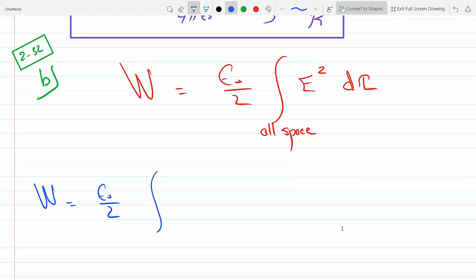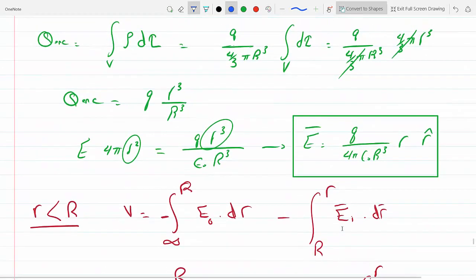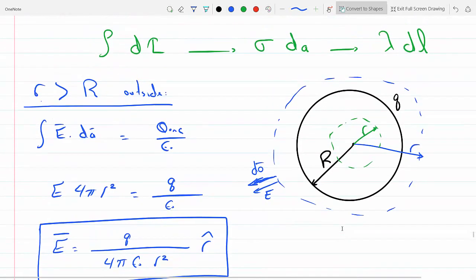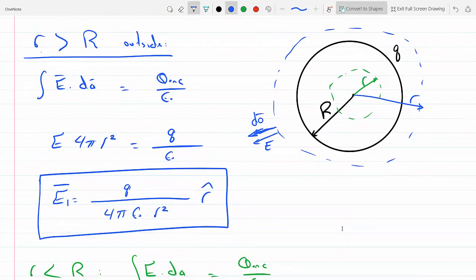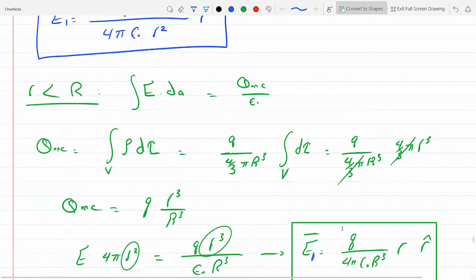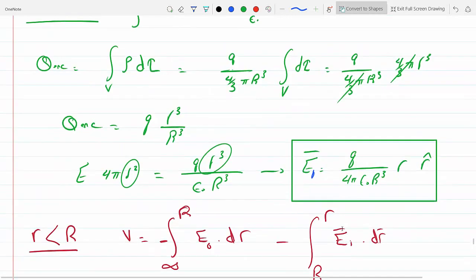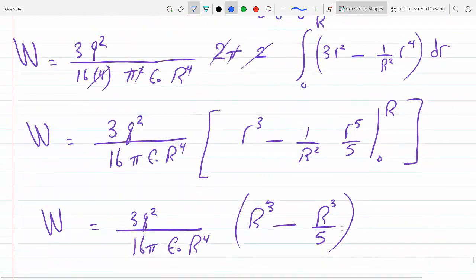So this is going to be epsilon_0 over 2, and I will go from 0 to R using the field inside the sphere. I called the outer one E0 and the inner one E1. So E1 from 0 to R, and E0 from R to infinity.